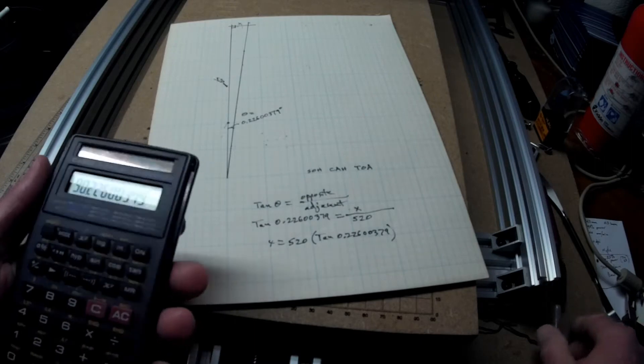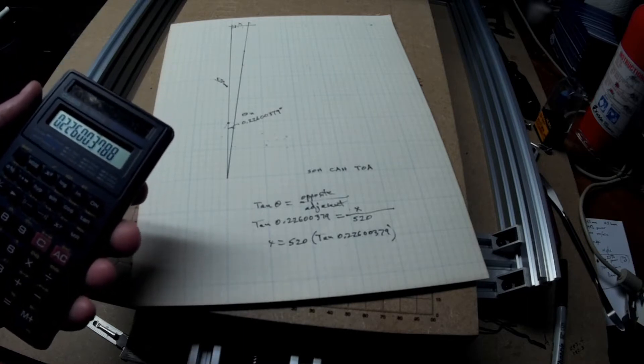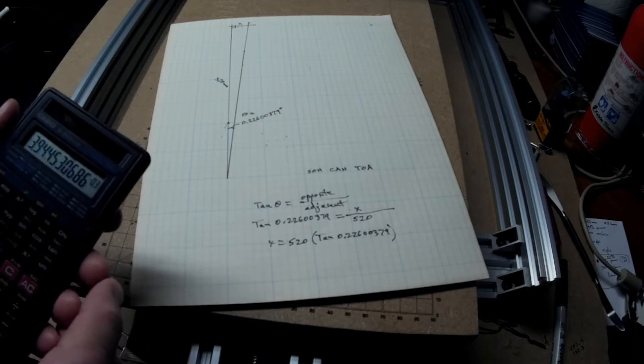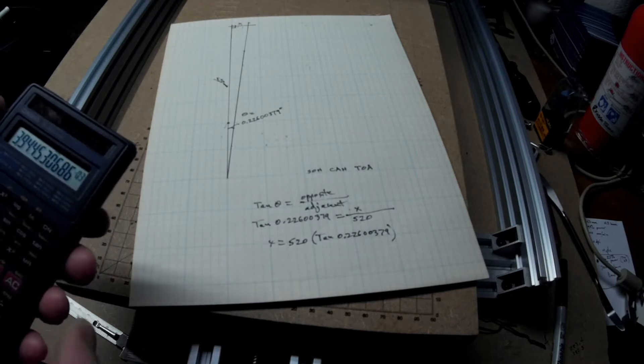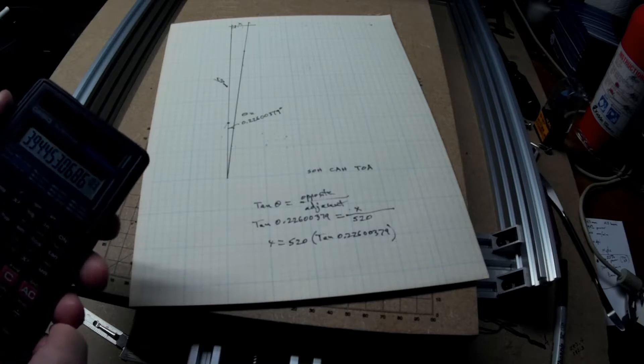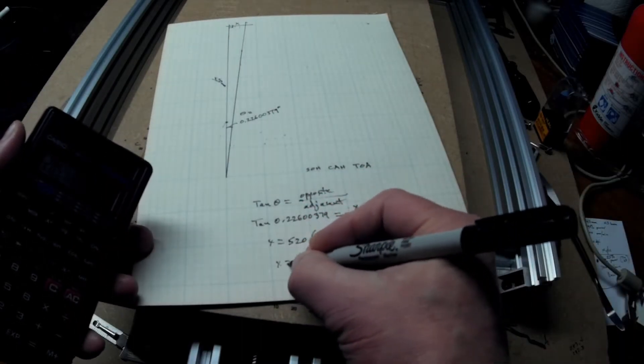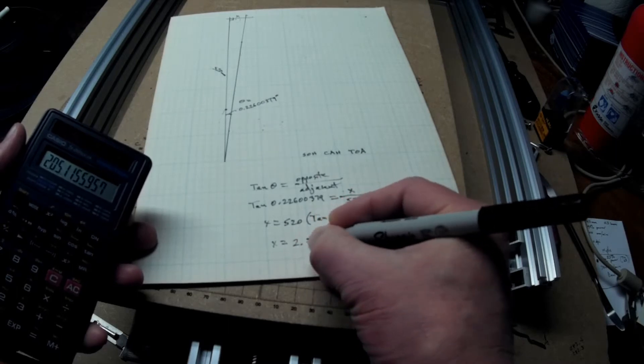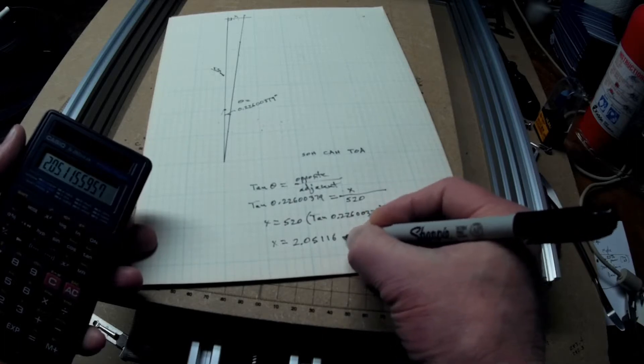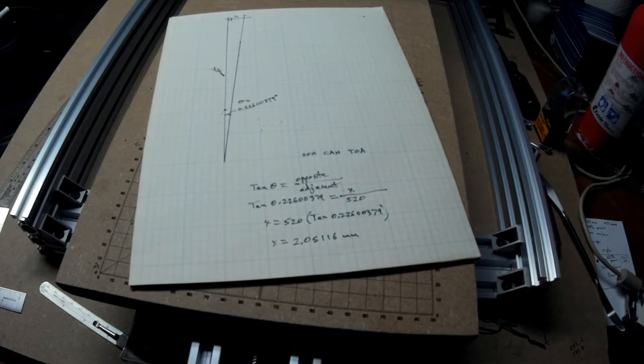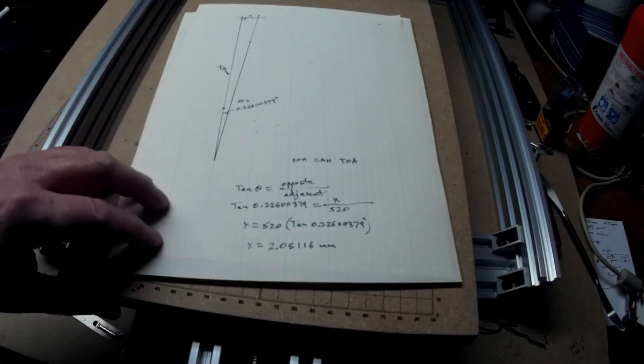Now, so, my calculator, I've still got the 90.226. I'm just going to subtract 90 from that. So, now I've got 0.226. I'll hit tangent. And, I've got another, it's in scientific notation, 3.9945 and so on. And, then I'll multiply that times 520. So, that distance is 2.05116 millimeters. So, that's how far I need to move this end over in order to get that to 90 degrees.